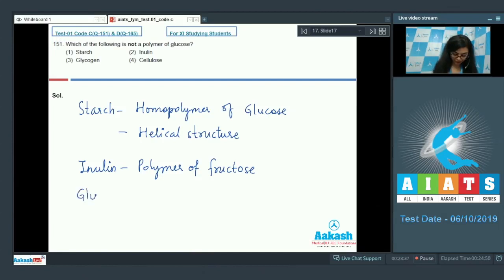Option number three, glycogen. Glycogen is also a homopolymer of glucose made up of about 30,000 units or residues of glucose. It shows a branched structure.